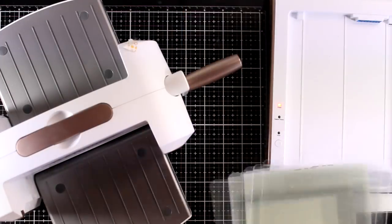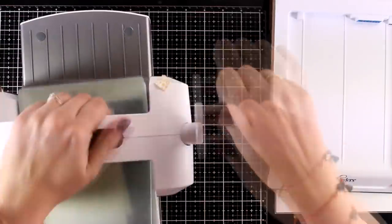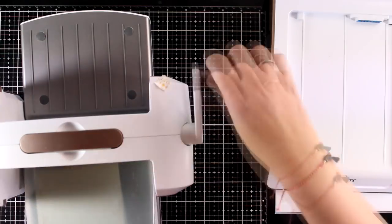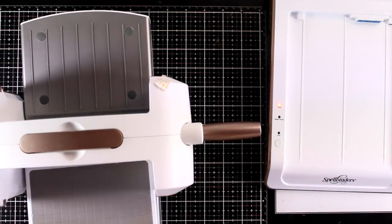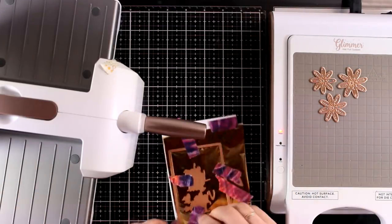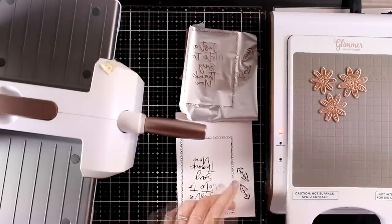And once my machine stops blinking I'm going to run the platform through my die cutting machine. I'm going to do that twice and then I can remove everything. I will go ahead and foil even more flowers for my composition so that I can stack one on top of the other to make them look fluffier.